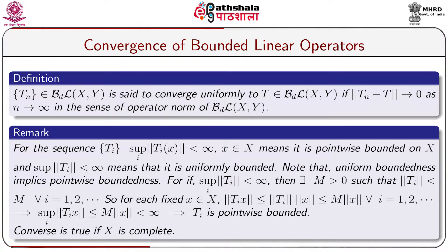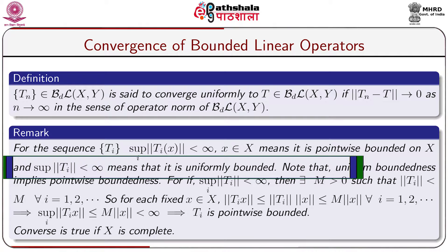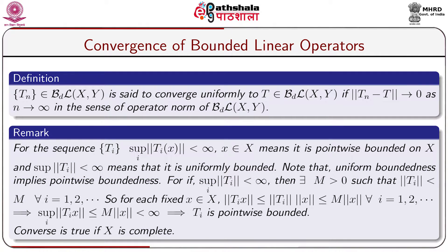Given a sequence of bounded linear operators T_i from BdL(X,Y): if the supremum over i of norm of T_i(x) is less than infinity for all x in X, the sequence is pointwise bounded; if the supremum over i of norm of T_i is less than infinity, it is uniformly bounded. Note that uniform boundedness implies pointwise boundedness, but the converse is not generally true — however, the converse is true if capital X is complete.